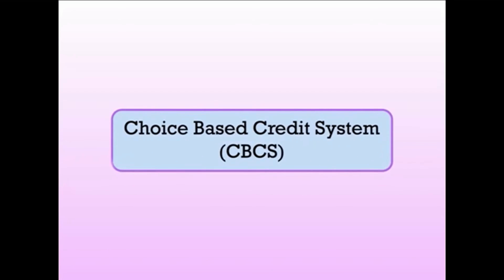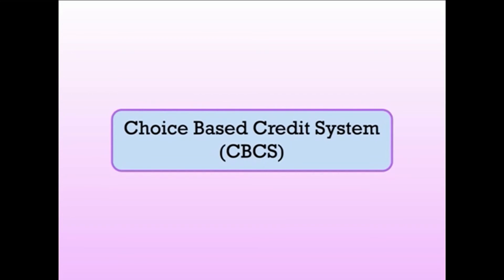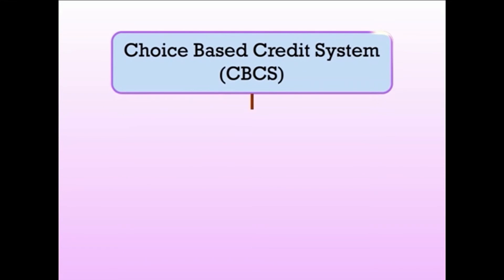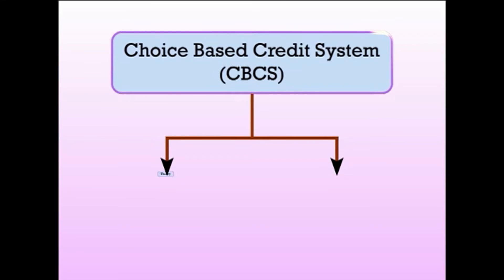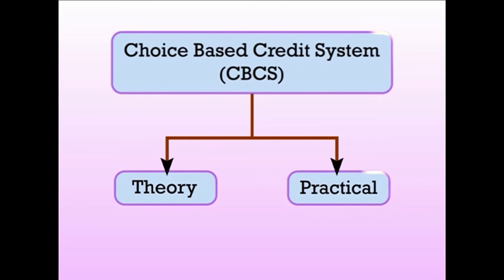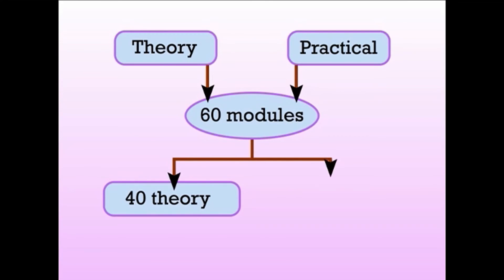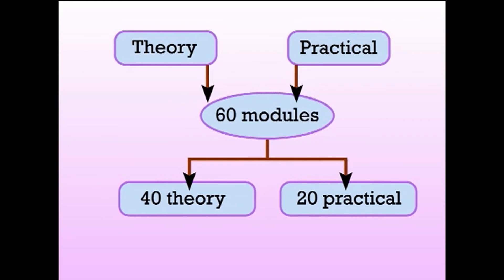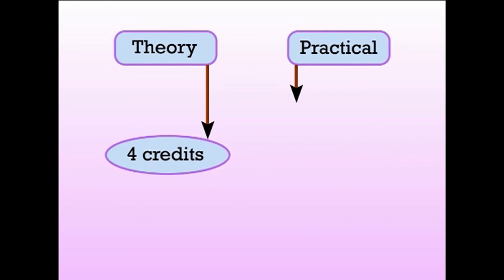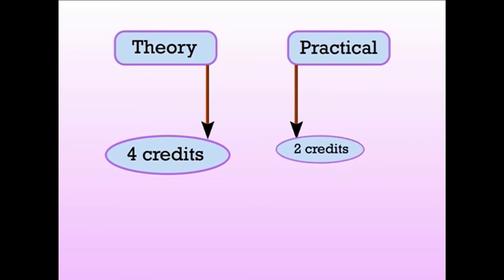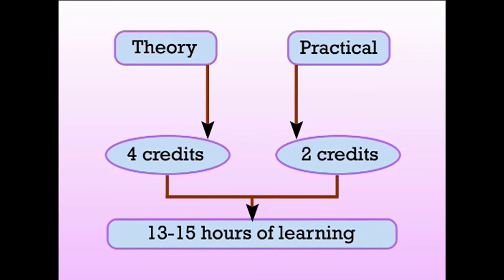The whole course is based on a choice-based credit system. This course has two sections, theory and practical, having 60 modules — 40 theory and 20 practical. The theory has four credits, whereas the practical has two credits. Each credit is equivalent to 13 to 15 hours of learning.